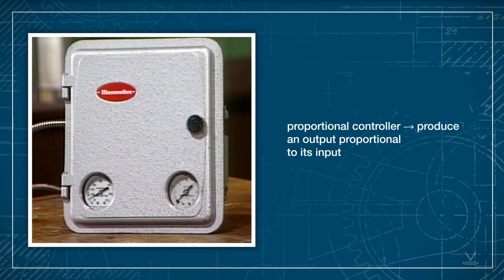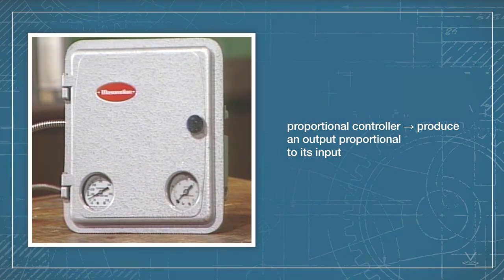Now, in a proportional controller, the basic mechanisms work together to enable the controller to produce an output that is proportional to its input. We'll examine how this controller provides P-only control in a few minutes. First, let's see how the controller's basic mechanisms can be arranged so that it can provide P-only control.